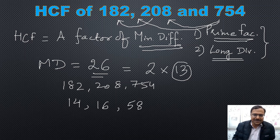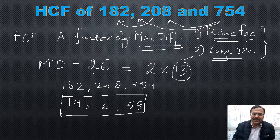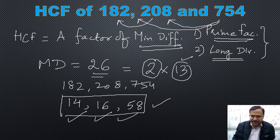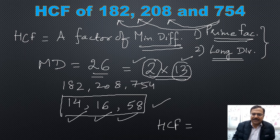All three numbers are divisible by 13, giving quotients 14, 16, and 58. Now check whether these three numbers are divisible by the other factor, 2 — they are all even numbers, so 2 divides all of them. Therefore, the HCF of the three numbers is 2 × 13 = 26.